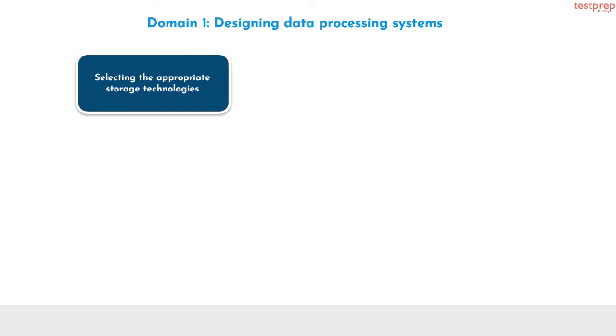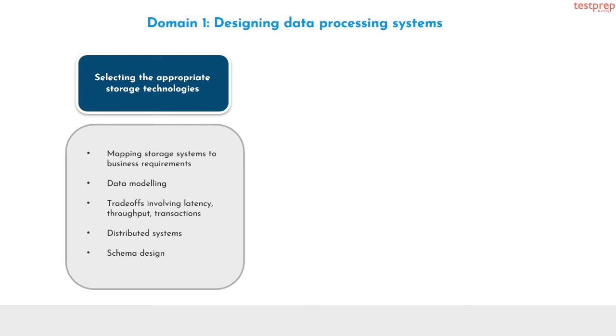Let us now discuss about course outline topics in detail. Module 1: Designing data processing systems. Number 1, selecting the appropriate storage technologies. It contains 5 subtopics: first, mapping storage systems to business requirements; second, data modeling; third, trade-offs involving latency, throughput, transactions; fourth, distributed systems; fifth, schema design.